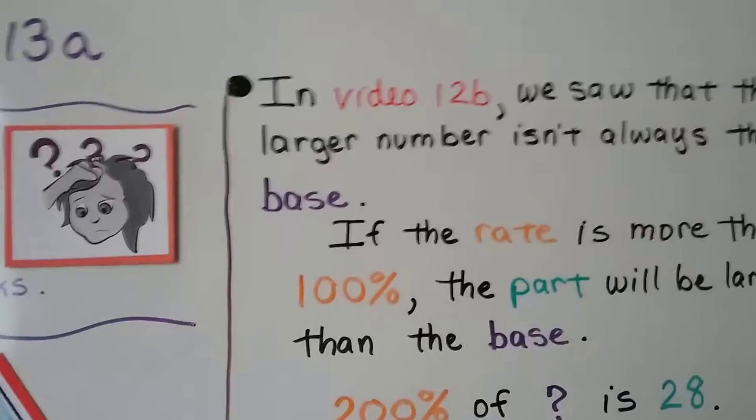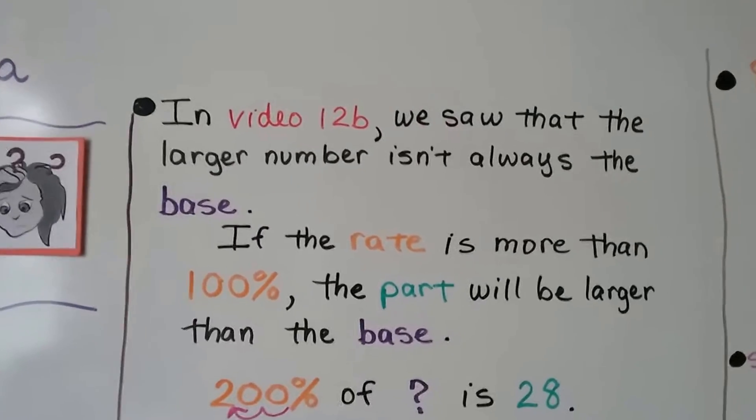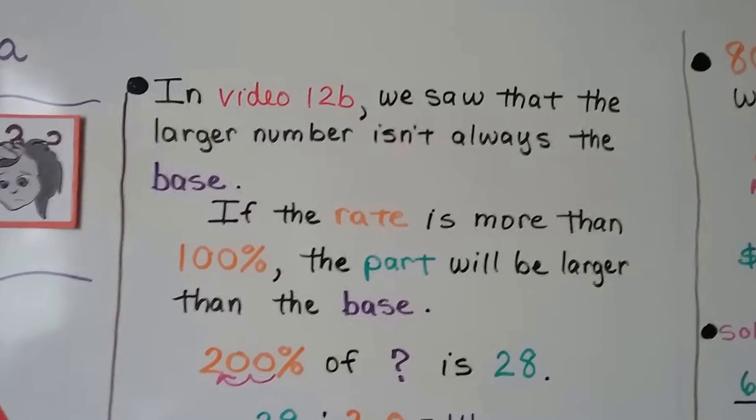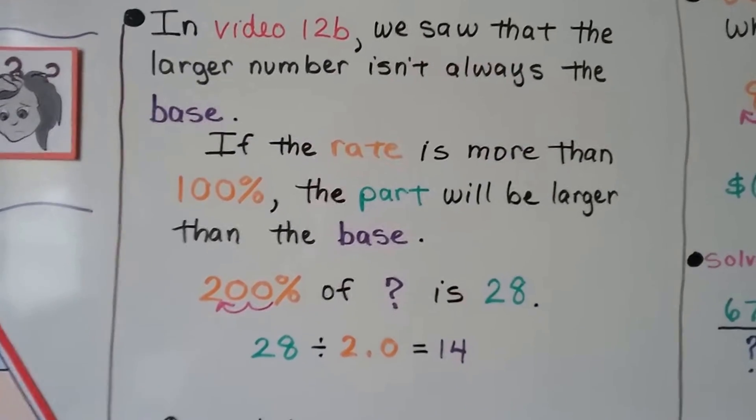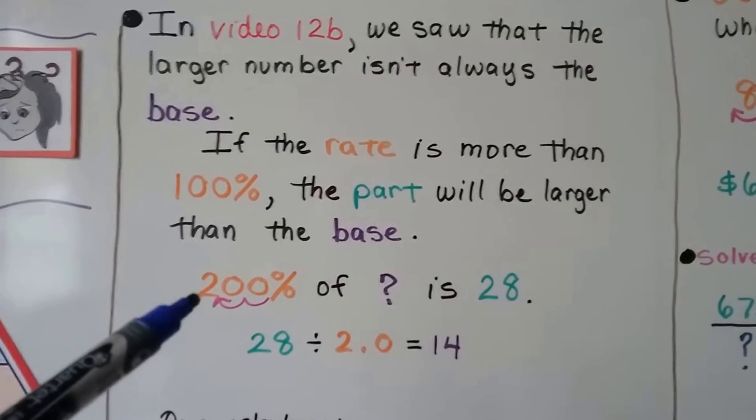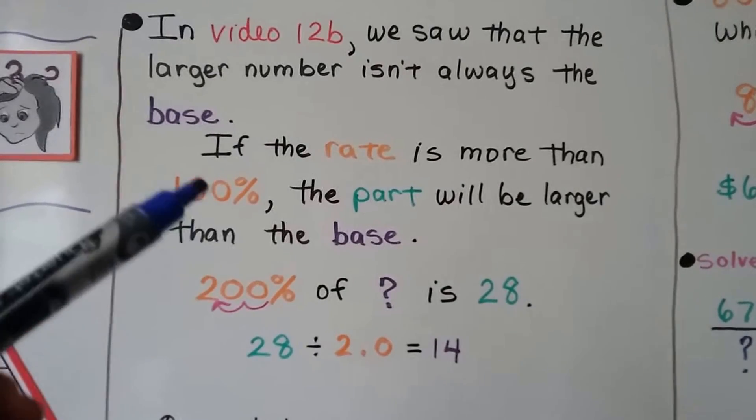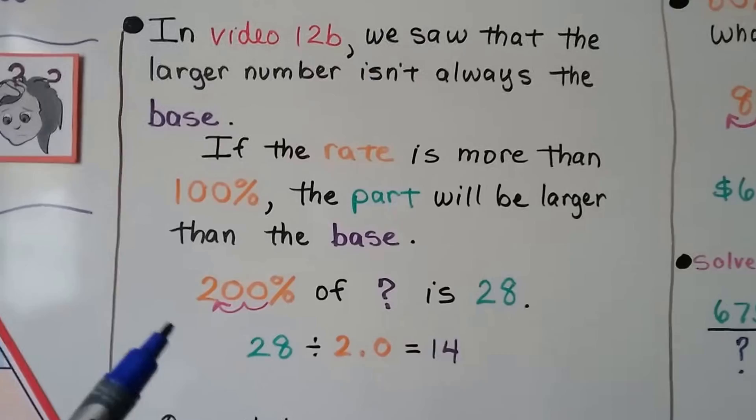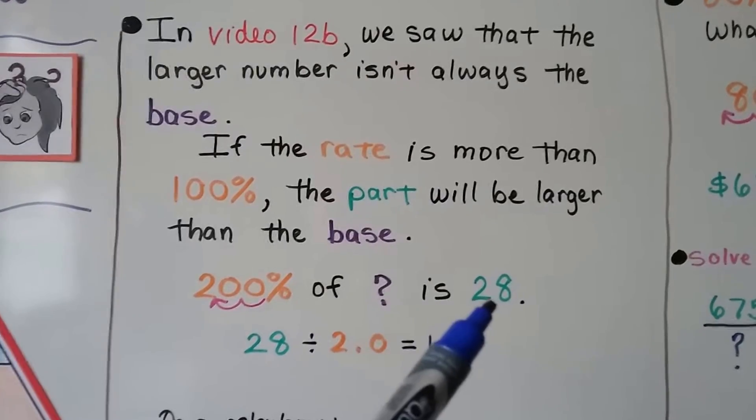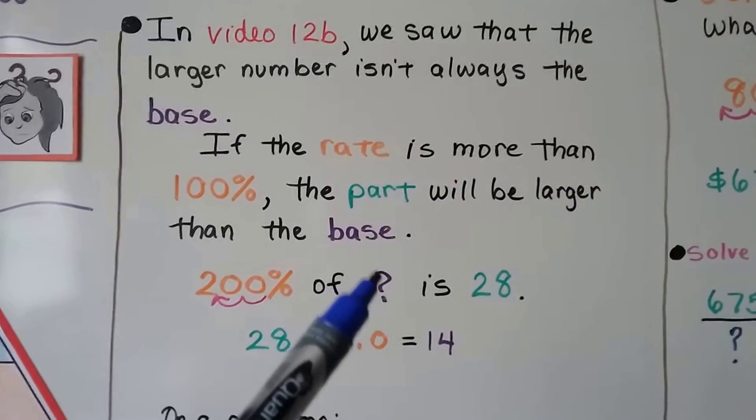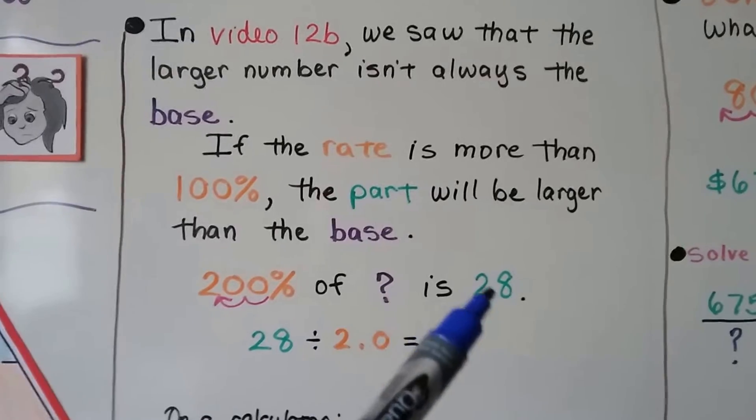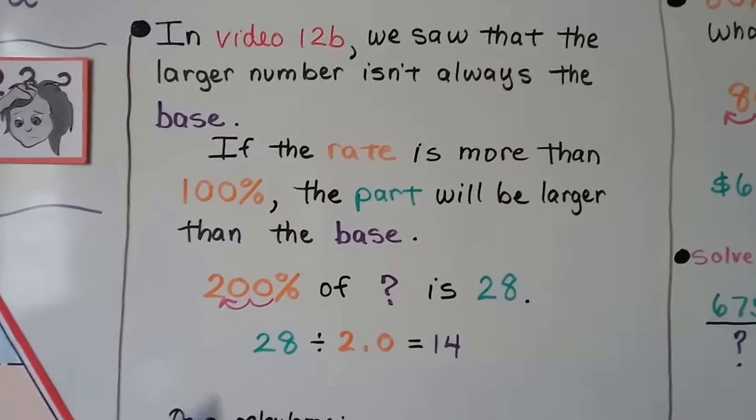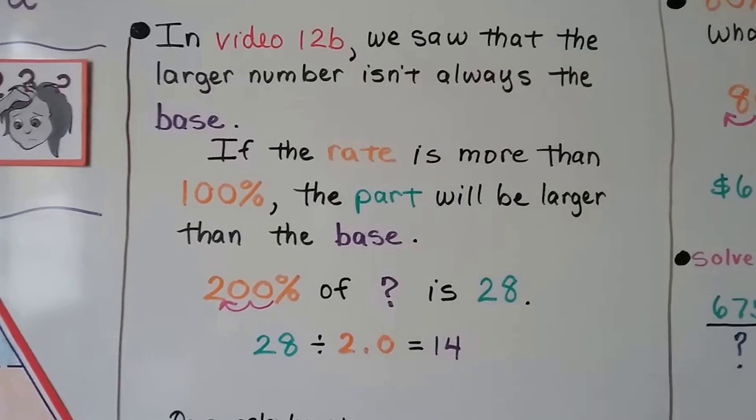In video 12b, we saw that the larger number isn't always the base. If the rate is more than 100%, the part will be larger than the base. So 200% is more than 100%. And 200% of some number is 28. That means that that is going to be a smaller number than the part, because our percentage is more than 100%.